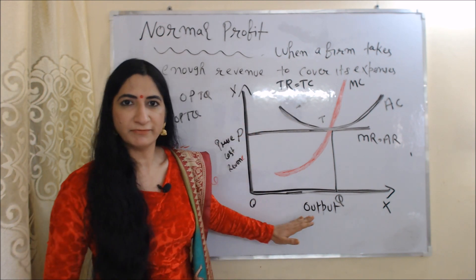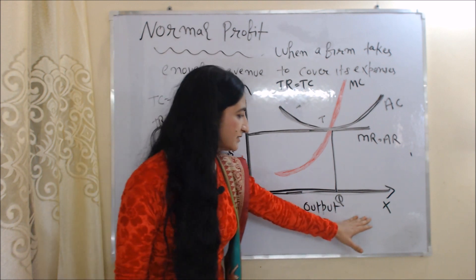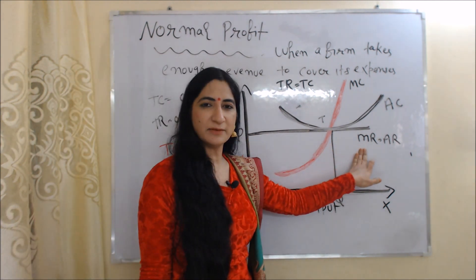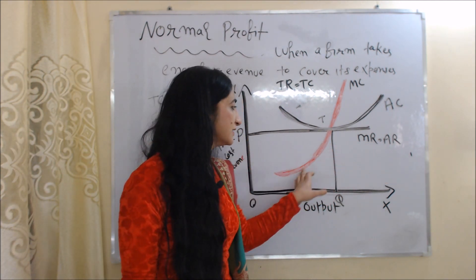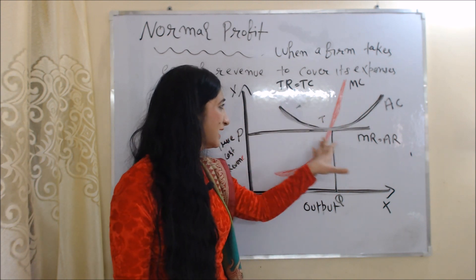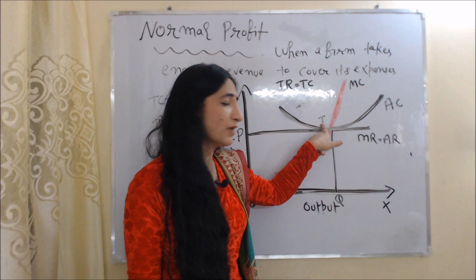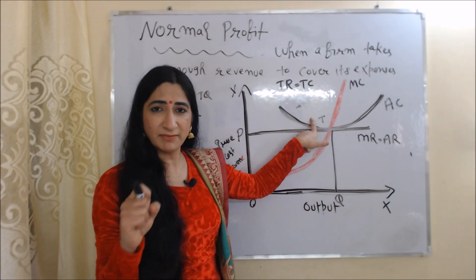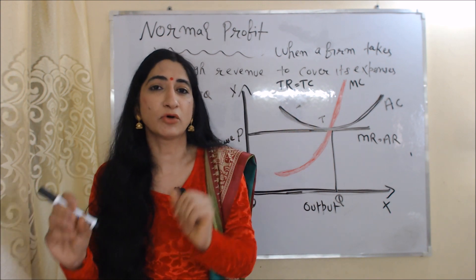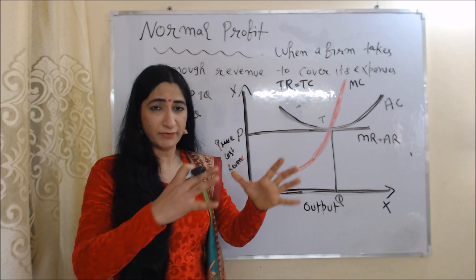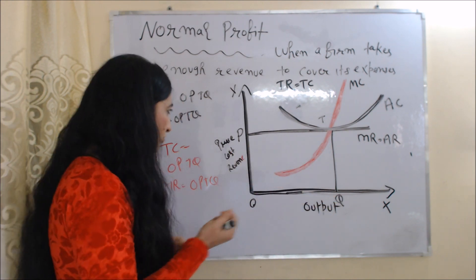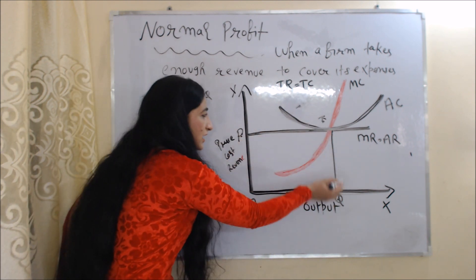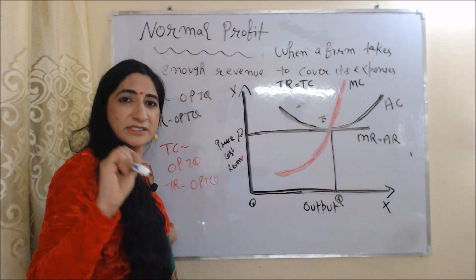Now we will see normal profit with the help of this diagram. On the x-axis we have output, and on the y-axis we have price, cost, and revenue. The horizontal line represents MR and AR. The red curve represents MC and the black curve represents AC. At point T, MC equals MR and MC cuts MR from below, so T is our stable equilibrium point. Here, total cost is OPTQ and total revenue is also OPTQ — they are equal. So we say that T is the normal profit point.